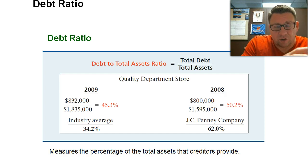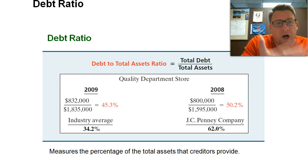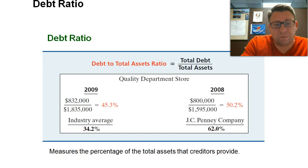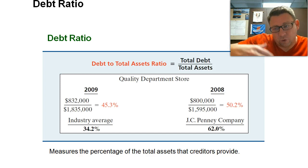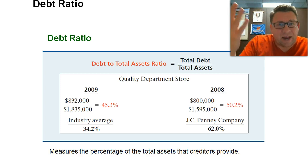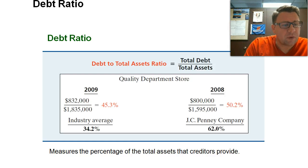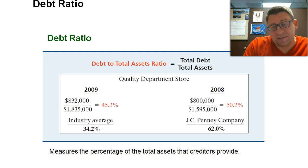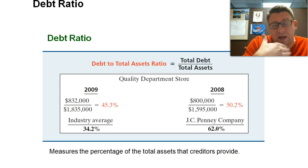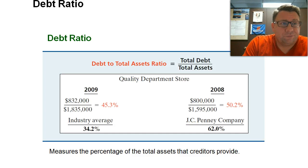Once they took controlling interest of the company, they'd go to the bank and borrow a bunch of money using the credit capacity of the company they just purchased, then pay themselves back with that. Or they'd use that money to go and buy another company. So in the 80s, they were essentially buying companies with the company's own line of credit.